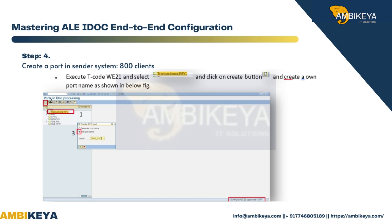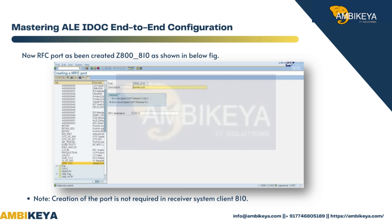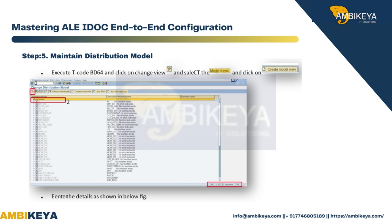Step 4: Create a port in sender system, client 800. Enter the description as sender port and RFC destination as ZLR810. Click on Save. The RFC port Z800_810 has now been created, as shown in the figure below. Note: Creation of the port is not required in receiver system client 810.